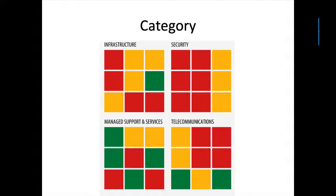Here's a look at the categories. These are the three categories included in the audit system: infrastructure, security, managed support and services, and telecommunications. Each of these has nine blocks, and each of those nine blocks must be either red, yellow, or green when you create your audit for it to be printable.